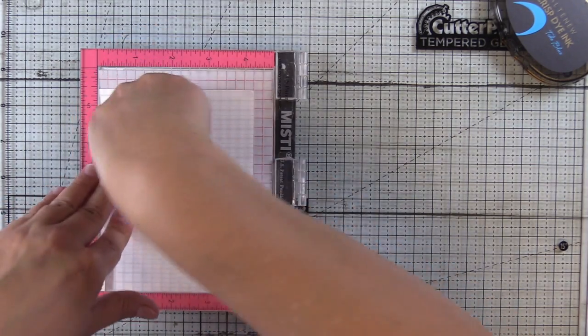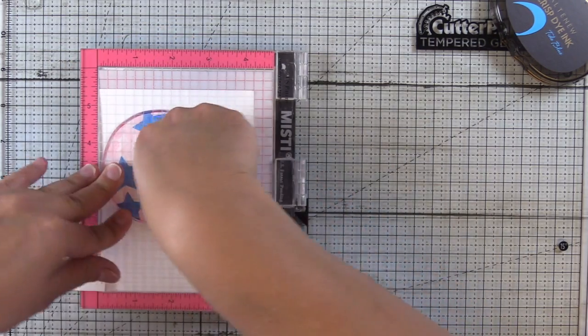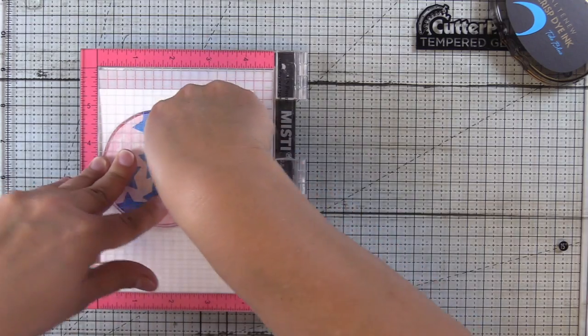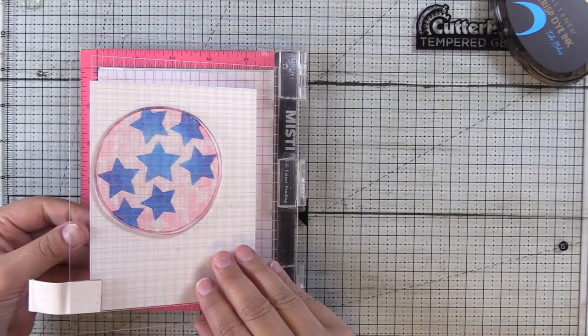The reason you want your die to be larger than your stamp is so that pattern can continue off the edge. That's going to look more realistic than it being smaller than your stamp. That's also going to help to create the edges.